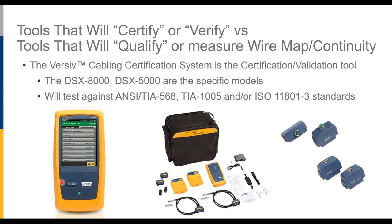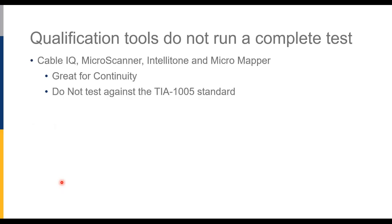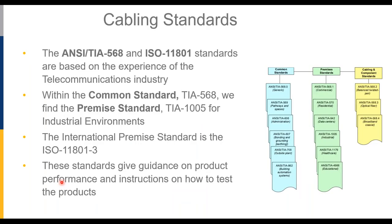An important distinction: in the telecommunications world we talk about certifying cabling, while in industrial environments people often talk about verifying cabling. A DSX-8000 or DSX-5000 can measure against the standards that an Ethernet application requires — not just checking continuity, but also noise on the cable. Simpler qualification tools can tell you if the cable goes from point A to point B, but may not tell you the distance to where a cable is open. These tools are helpful for day-to-day management: is there a switch on the far end? What's the distance to where the cable is open?